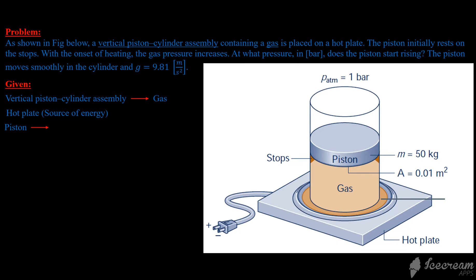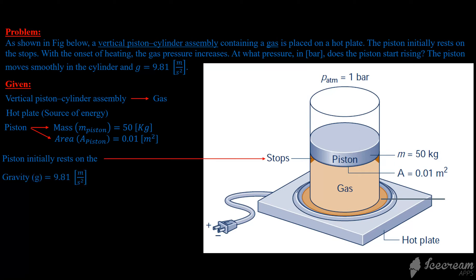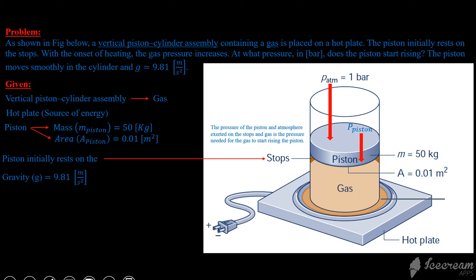The piston mass is 50 kilograms, the area of the piston is 0.01 meter squared, and the piston initially rests on the stops as shown in the figure. The atmospheric pressure of one bar exerts a pressure on the stops and gas, and the piston also exerts a pressure on the stops and gas.